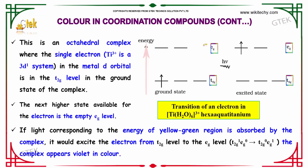The next highest state available for the electron is the eg level. If light corresponding to the energy of the yellow-green region is absorbed by the complex, it would excite the electron from the t2g level to the eg level — from t2g¹ eg⁰ to t2g⁰ eg¹ — and the complex appears violet in color.